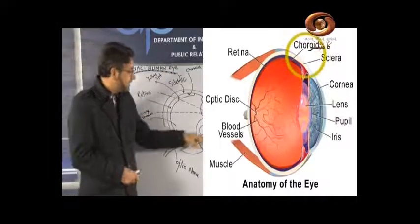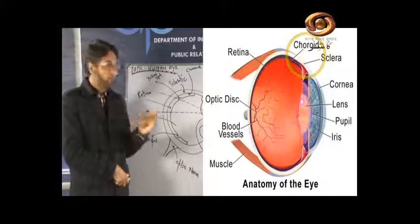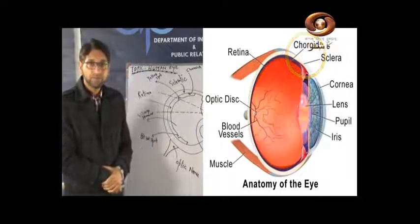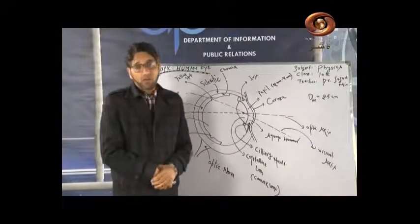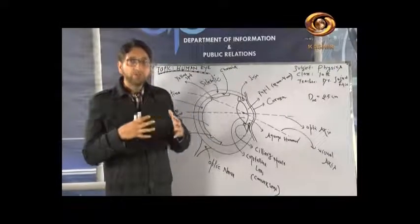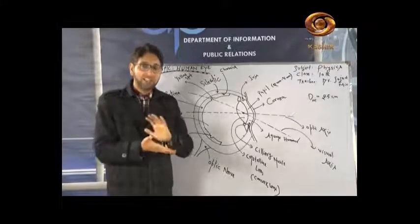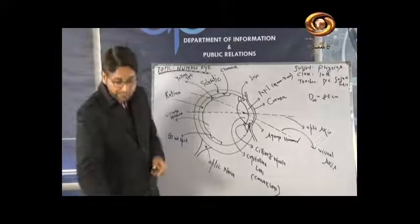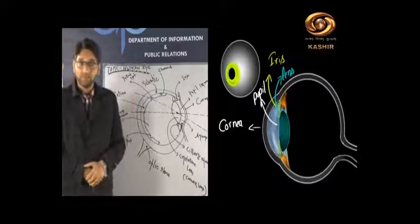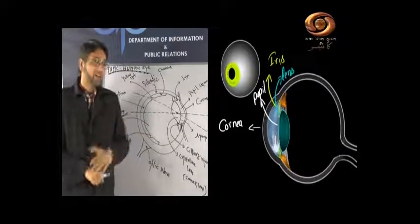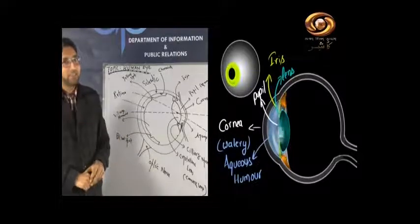Now, the outer sclerotic — which is what you see as the white of the eye — merges with a transparent tissue at the front. When these two materials merge, a new structure is formed called the cornea. The cornea is the main entrance point through which light enters the eye. So cornea is formed by the junction of the sclerotic and a transparent tissue.